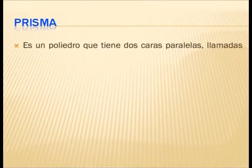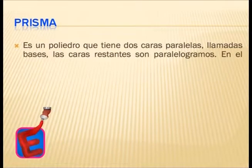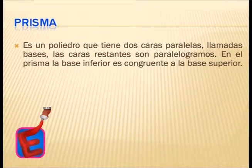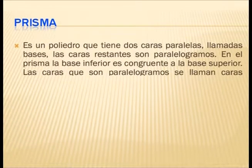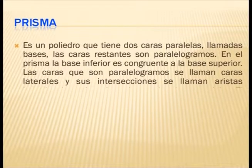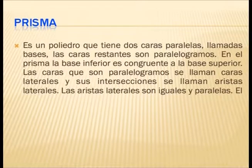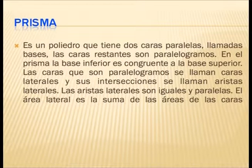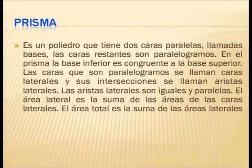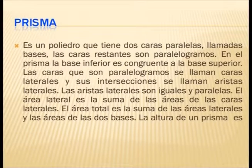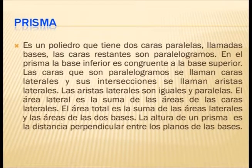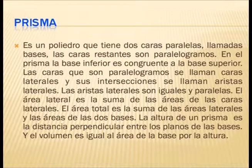Prisma: es un poliedro que tiene dos caras paralelas llamadas bases. Las caras restantes son paralelogramos. La base inferior es congruente a la base superior. Las caras que son paralelogramos se llaman caras laterales, y sus intersecciones se llaman aristas laterales. Las aristas laterales son iguales y paralelas. El área lateral es la suma de las áreas de las caras laterales. El área total es la suma de las áreas laterales y las áreas de las dos bases. La altura de un prisma es la distancia perpendicular entre los planos de las bases, y el volumen es igual al área de la base por la altura.